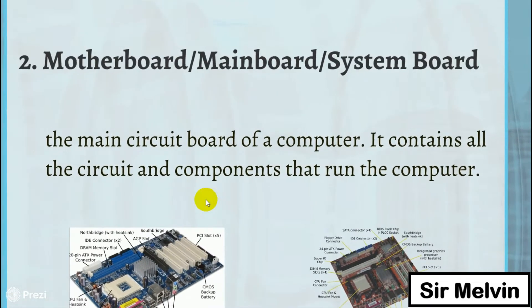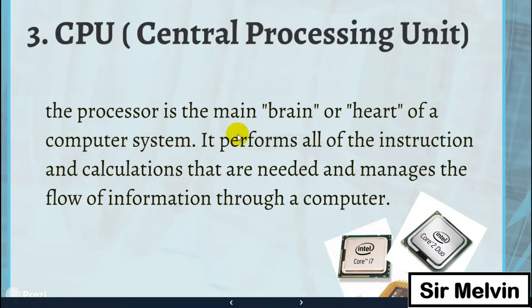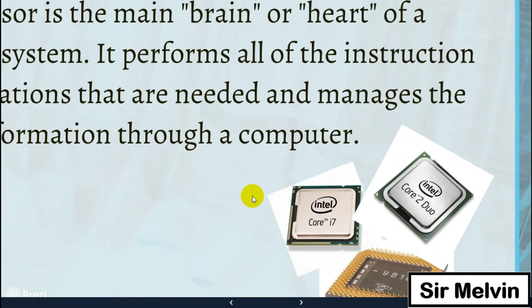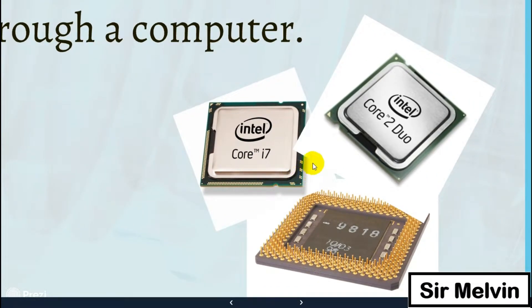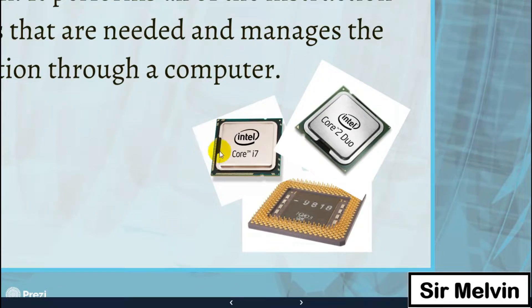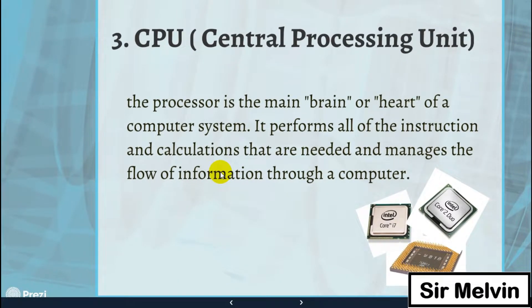Number three is the CPU or central processing unit. The processor is the main brain or heart of a computer system. It performs all the instructions and calculations needed and manages the flow of information through a computer. Common examples of CPUs are Intel and AMD.